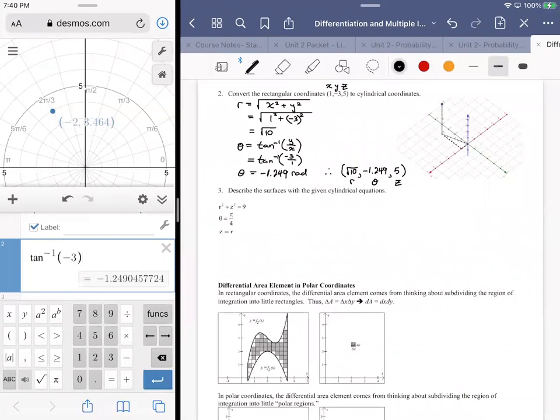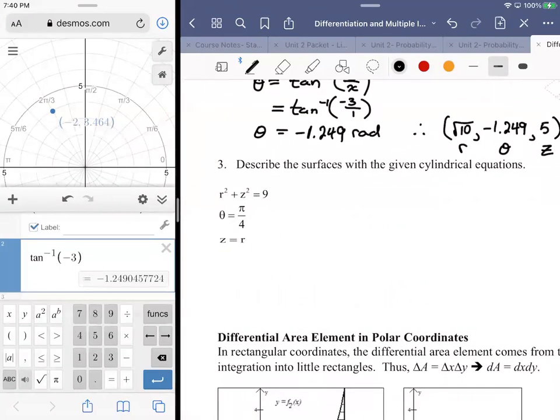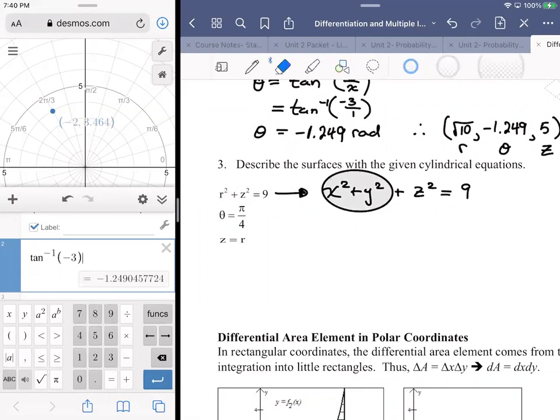Now we could also have surfaces in polar form - it's a little bit of a different sort of animal but it's definitely doable. In the case of the first one, r² - we know that that's the same as x² + y² - plus z² equals 9. So what we're looking at here, this came from this relationship, what we're looking at is a sphere with radius equal to 3.